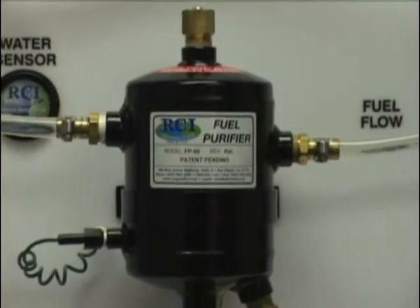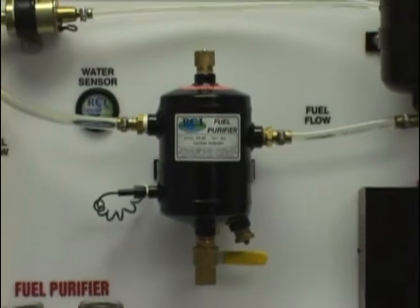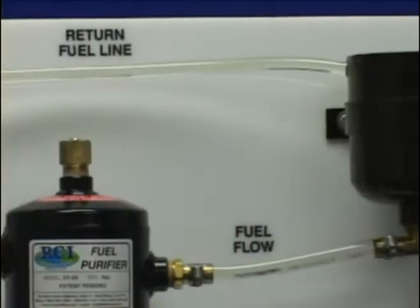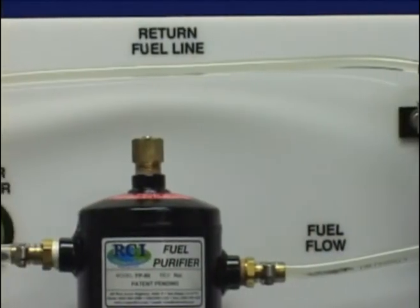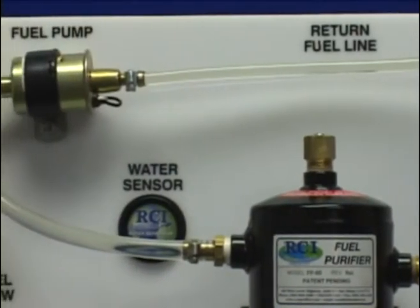Here we have a standard fuel system with a fuel supply, an RCI Technologies fuel purifier, and a small fuel pump to give it circulation. There is less than one gallon of fuel in this entire system.